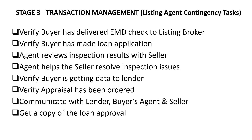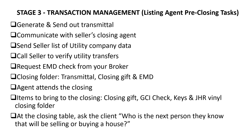For listing agent contingency tasks: verify the buyer has delivered the earnest money deposit check to your broker, make sure the buyer makes loan application, and when the buyer's inspections come in, review the results with your seller and help resolve any inspection issues. Make sure the buyer is getting all required data to their lender so the loan can be approved, ensure the appraisal has been ordered, keep communicating with the lender, the buyer's agent, and your seller, and get a copy of the loan approval as soon as possible to confirm the financing contingency has been met.